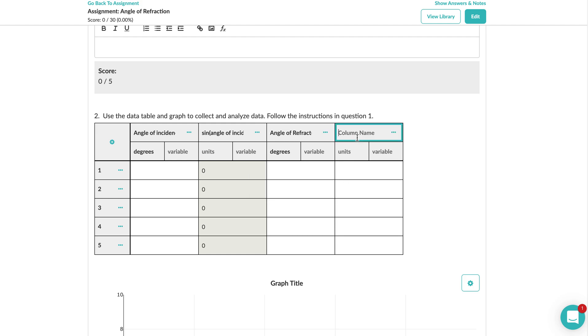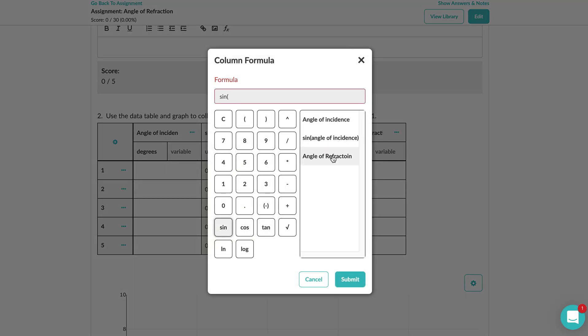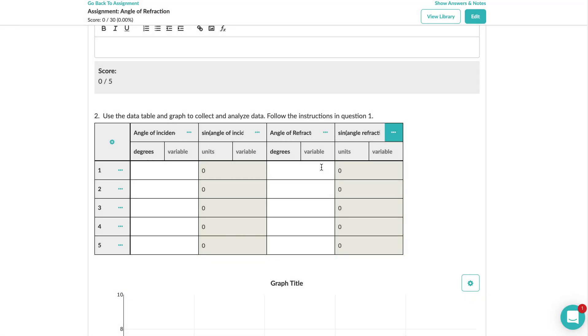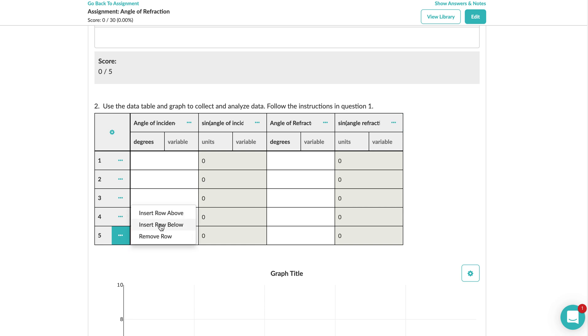For the angle refraction you're also going to insert a column to the right and take the sine of that again because the equation calls for that. You would need to set up the column formula so again you would go sine angle of refraction, close parentheses. I spelled it wrong so you might want to fix that in yours. We're going to do ten rows so we can get a really clear line of best fit.